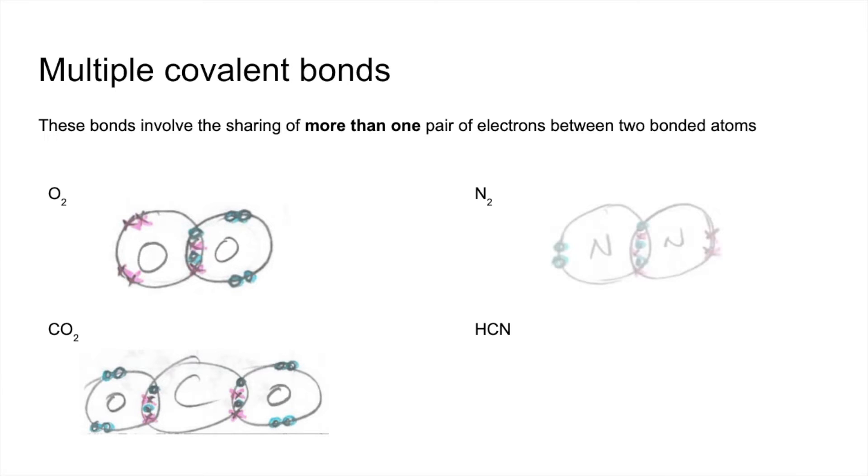Carbon dioxide, you've got two double covalent bonds between the carbon and the oxygens. Nitrogen, you've actually got a triple covalent bond there because each nitrogen is sharing three of its valence electrons.